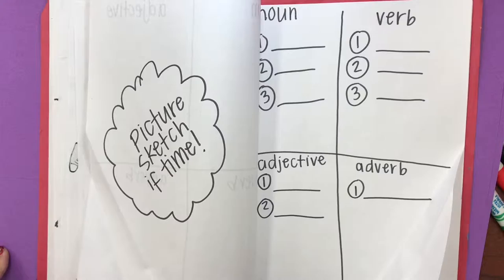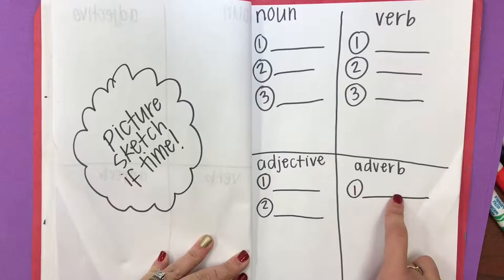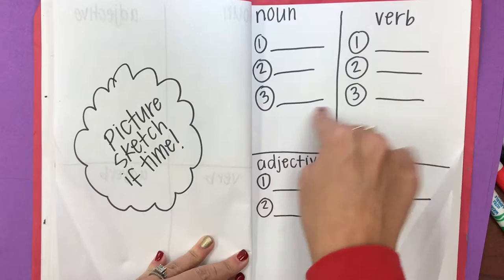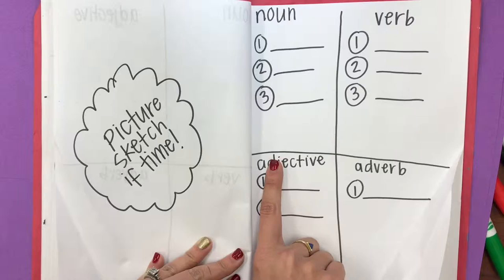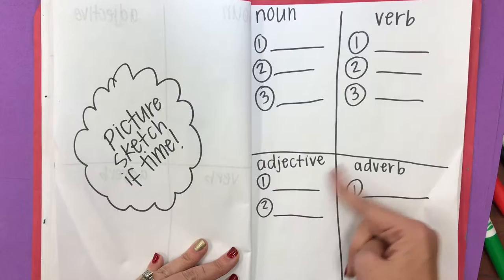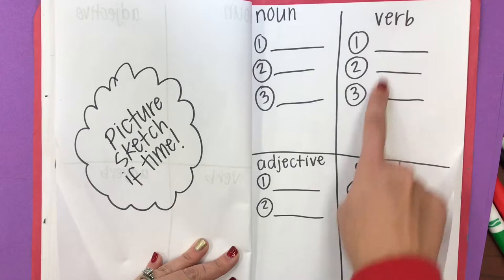Divide your sketchbook up into four areas, and you're going to use your brainstorming ideas from your friends to put those into your four categories. You need to put your nouns — which is a person, place, or thing — into this category. Your verbs, which are your actions, into this category. Your adjectives into this one, which is a word that describes a noun. And your adverb into this one, which is a word that describes your verb.